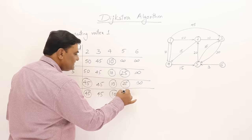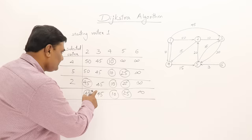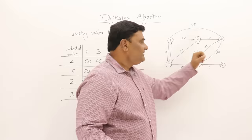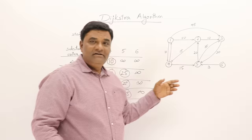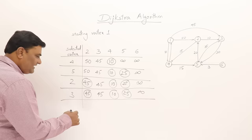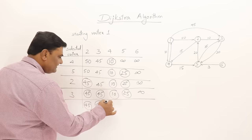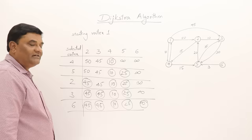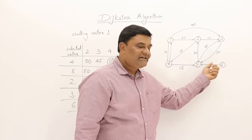Now select the next minimum — vertex 3, with distance 45. From vertex 3 there is an edge to vertex 5, but vertex 5 is already in the selected set. Checking anyway: 45 plus 30 is 75, and vertex 5 already has distance 25, so no use. Nothing is relaxed. The last remaining vertex is 6 with distance infinity — so vertex 6 is also selected. The path to vertex 6 has remained infinity because there is no incoming edge on vertex 6, so we cannot reach it.